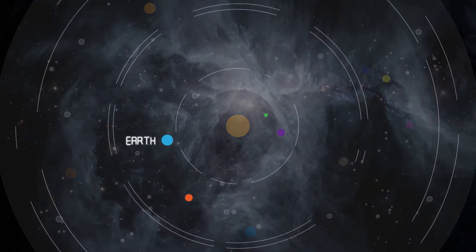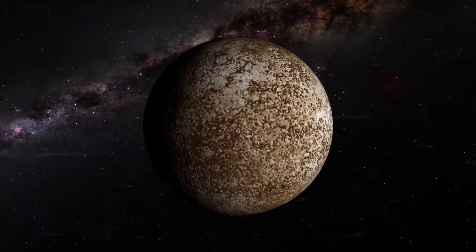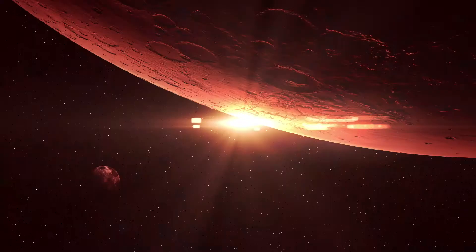Close to the Sun, the four terrestrial, mostly rocky planets formed: Mercury, Venus, Earth and Mars. Each planet is unique.